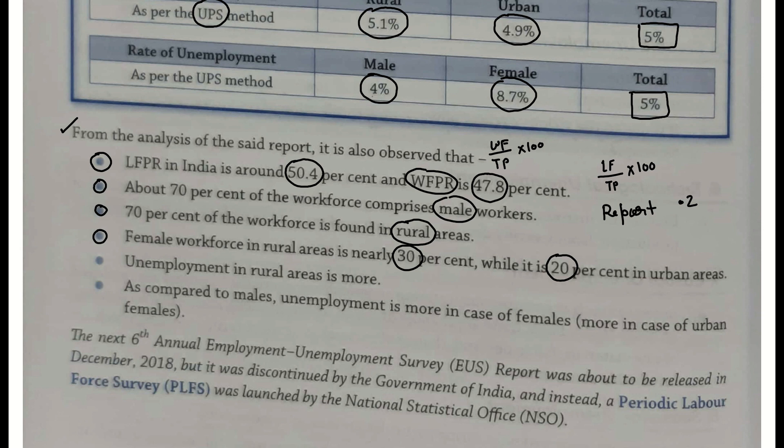Aur employment ki definition humne dekhi thi. Kabhii-kabhi woh disguised unemployment ki form mein bhi ho sakta hai, lekin lagega employment aisa. Aur jo janasankhya jo zyada rehti hai — female workers — woh rural areas mein zyada dekhne ko milti hai, aur woh workforce hogi jo actually working hai.